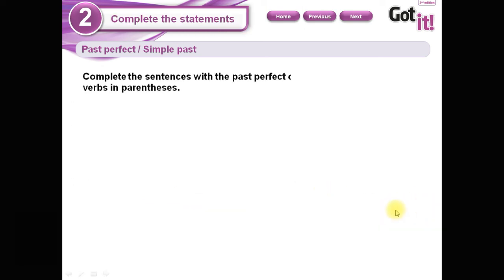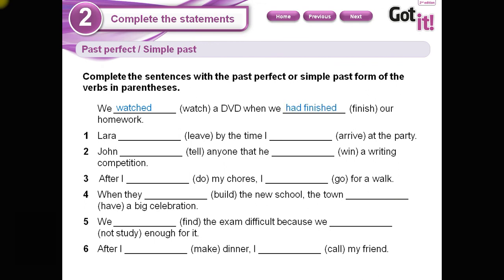Now we are going to take a look at some exercises here. We have to use simple past or past perfect. Debo determinar en qué lugar de la oración yo debo usar el pasado perfecto, que es el que tiene el 'had', y en qué lugar debo usar el pasado simple. So let's take a look at this example: 'We watched a DVD when we had finished our homework.' La acción que es previa es: habíamos terminado nuestra tarea. Luego vieron los DVDs.